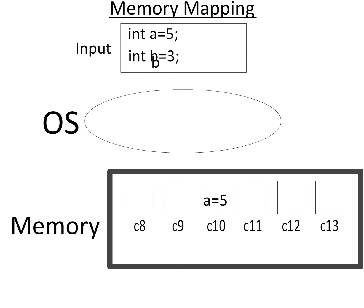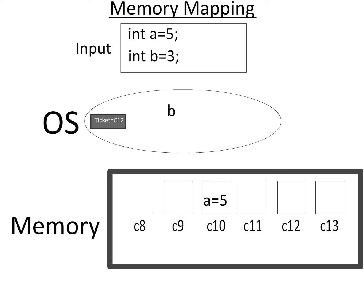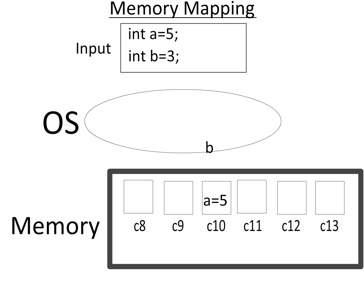Suppose you declare another variable b and the ticket given to it by the operating system is c12. So in spite of c11 or c9 or c8 being empty, variable b will only reside in the location c12, and the value at that location will be as declared by the user, or a garbage value if it is not initialized.